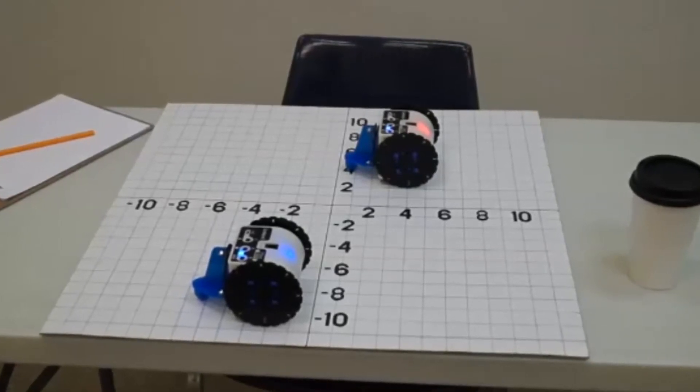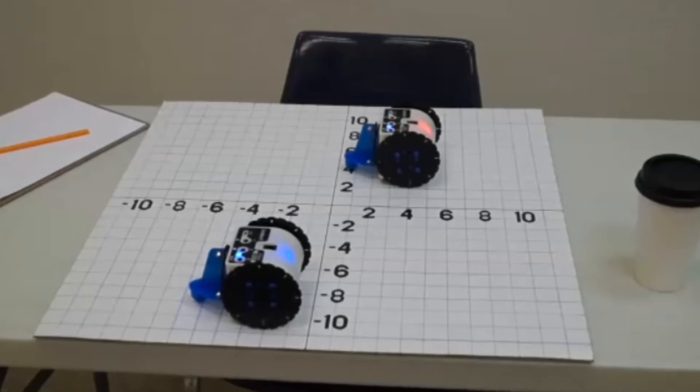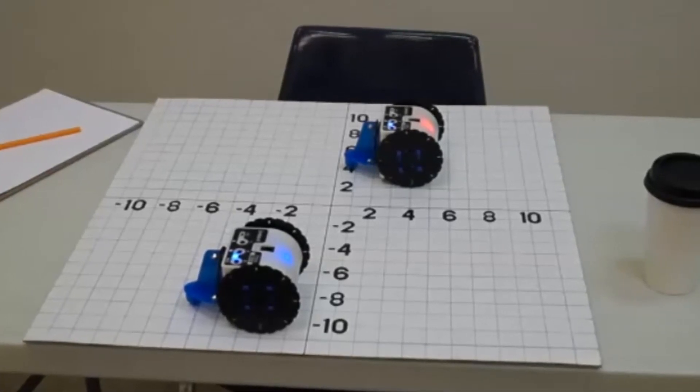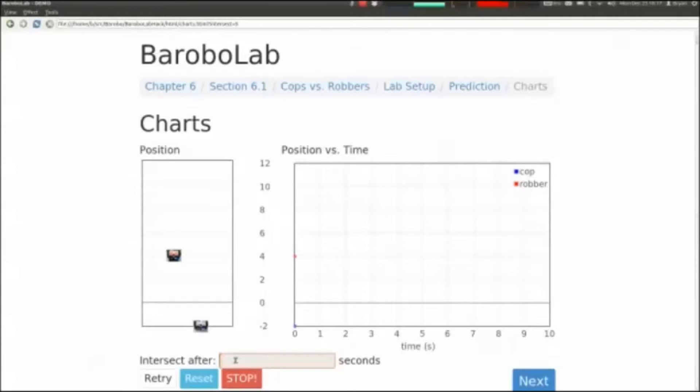The cop travels twice as fast as a robber but starts six inches behind. When will it catch up? Barobolab is projected on a screen for kids to see and has graphs and virtual representations of the robots.